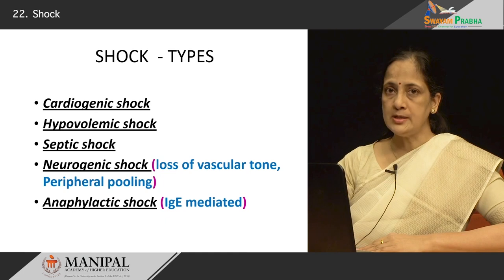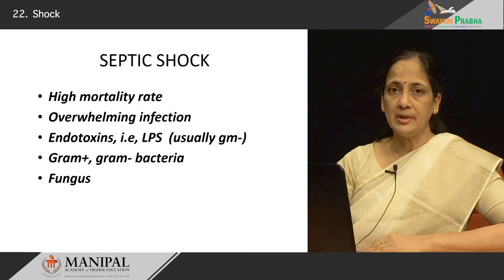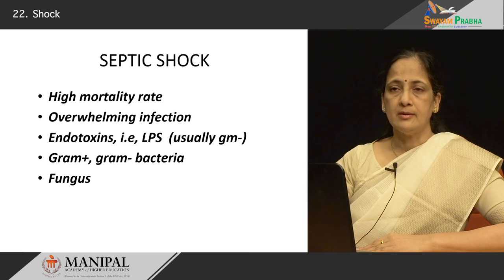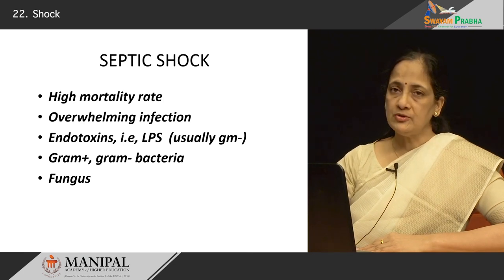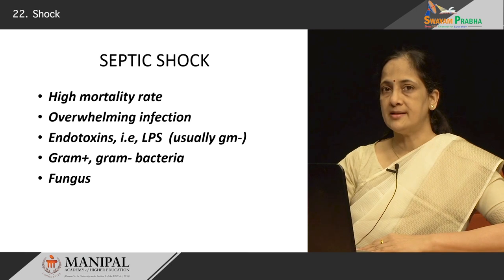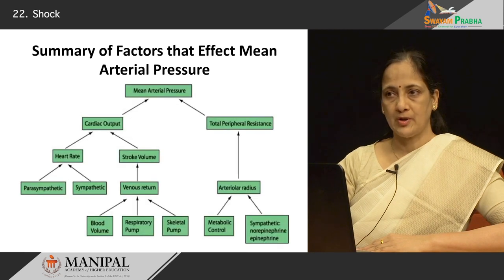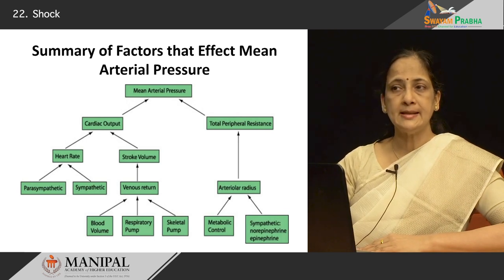The third and very important type of shock is septic shock, associated with very high mortality. It is usually seen in patients with overwhelming infection and is quite common in debilitated patients, those hospitalized for long periods, or immunocompromised individuals. The mechanism involves toxins released by infective agents. Both gram-positive and gram-negative bacteria can cause septic shock, and sometimes fungal infections also cause it. In septic shock, compared to the other two types, the mechanism is slightly different.